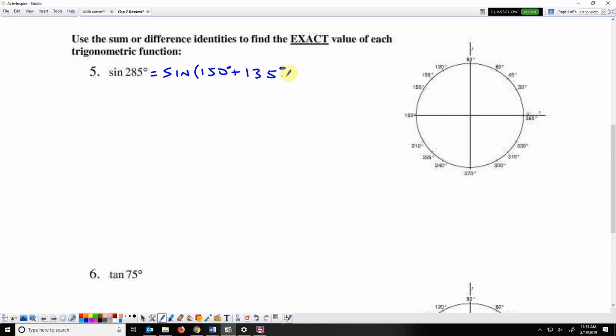So that's one example of how we could either add or subtract to make 285. So there's 150 and 135. The sum and difference identity for sine tells us that we need to do sine of first angle times cosine of the second angle.